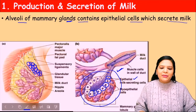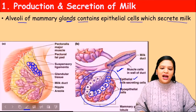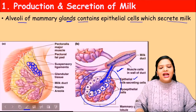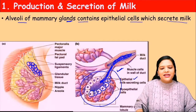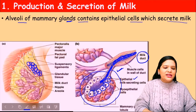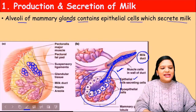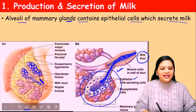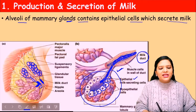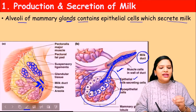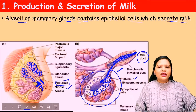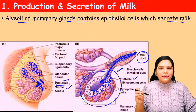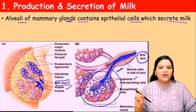The epithelial cells secrete milk into a canal, and it gets collected in an area called the milk duct. All the lobules contain alveoli which secrete milk, and this milk gets collected and stored in the milk duct. Whenever the baby sucks, the milk stored in the milk duct gets released out. So the epithelial cells of the alveoli of the mammary glands secrete the milk.